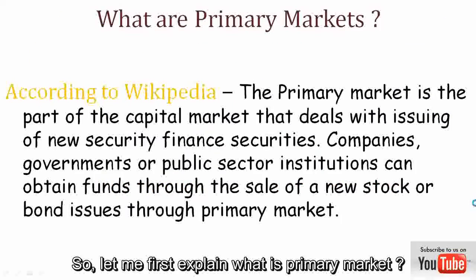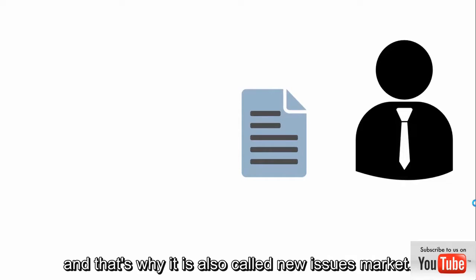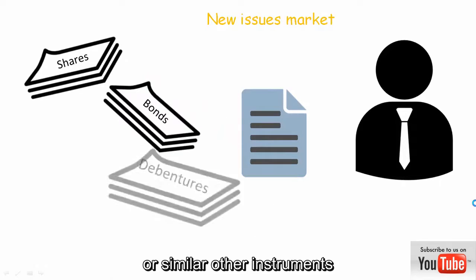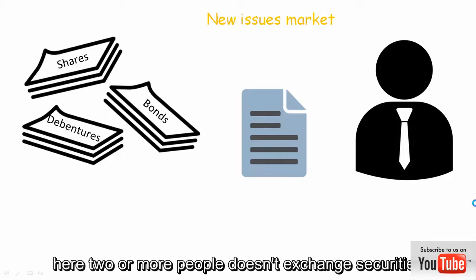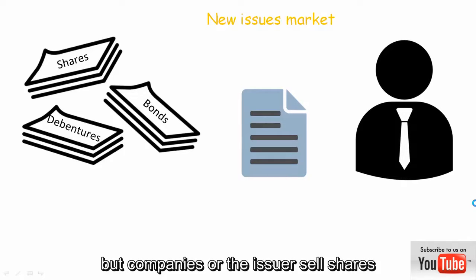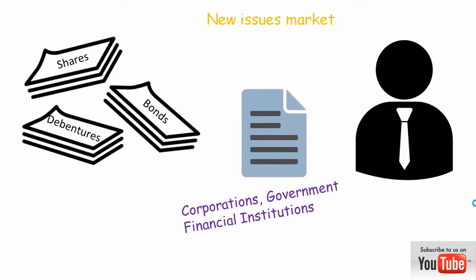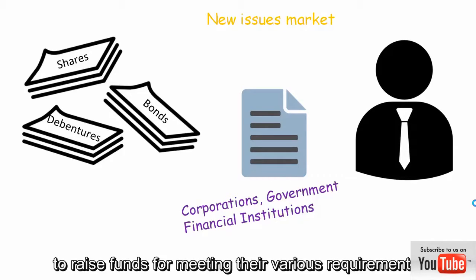The primary market is a market where new securities are created, issued, and sold to investors for the very first time — that's why it is also called the new issues market. Companies that are private approach investors and try to sell securities such as shares, bonds, or similar instruments, and receive money in return. Unlike the stock market, here two people don't exchange securities; instead, the issuer sells shares directly to investors. The primary market's main role is to provide a market for the sale of new securities and gives issuers the opportunity to raise funds for meeting their various requirements.